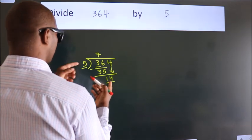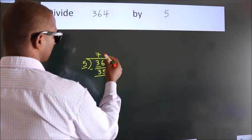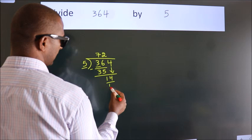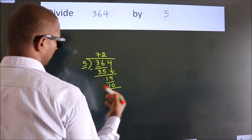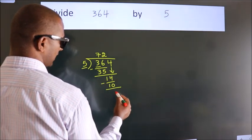A number close to 14 in the 5 table is 5 times 2 equals 10. Now we subtract. We get 4.